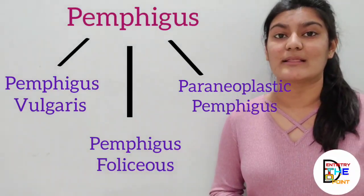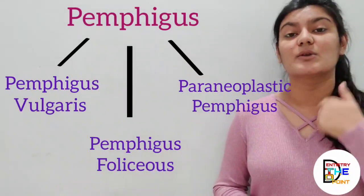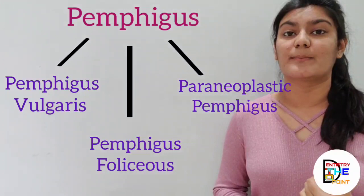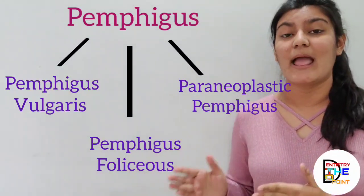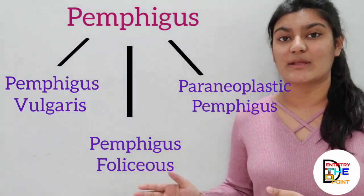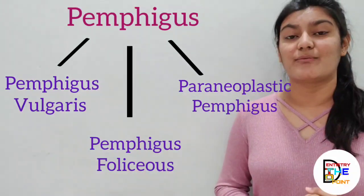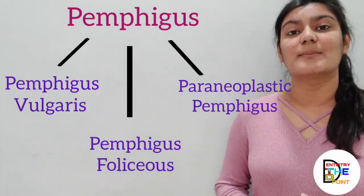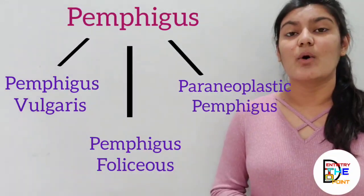As discussed in Part 1, pemphigus was divided into three parts: the first being pemphigus vulgaris, which is the most common and accounts for 70% of cases; the second being pemphigus foliaceus; and the third being paraneoplastic pemphigus. A short note on pemphigus vulgaris is covered by Part 1, and for a comprehensive note on pemphigus as a whole, you can describe all three forms.